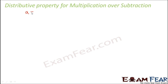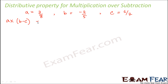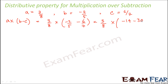For subtraction, we again take a = 3/8, b = −2/5, and c = 6/7. We calculate a into (b minus c): 3/8 into (−2/5 minus 6/7), which is 3/8 into (−14 − 30)/35, giving 3/8 into −44/35. This comes out to be −33/70.